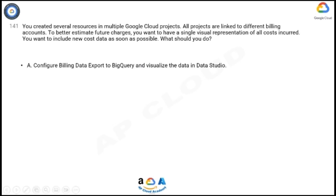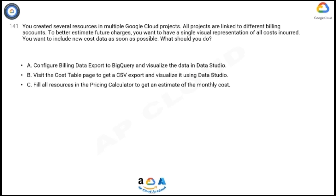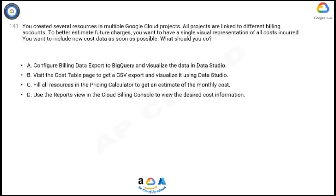B: Visit the cost table page to get a CSV export and visualize it using Data Studio. C: Fill all resources in the pricing calculator to get an estimate of the monthly cost. D: Use the reports view in the Cloud Billing console to view the desired cost information. Now take 10 seconds to think about the answer.